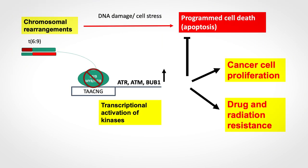Chromosomal rearrangements like those found in ACC tumors should in principle lead to cellular stress, inducing programmed cell death or apoptosis. So in the face of this DNA damage imposed by chromosomal changes, the cancer cells should die — but clearly this is not the case, since ACC cells grow and form a tumor.